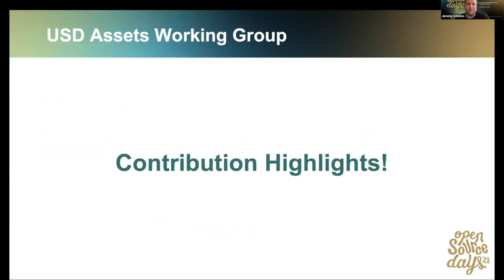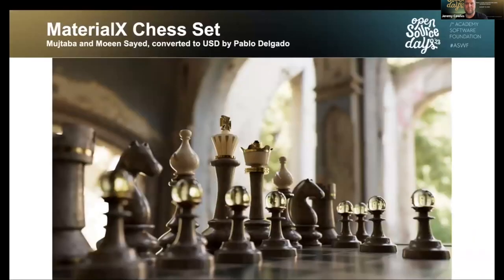I want to show some contribution highlights — just a tiny swath of the awesome things people have contributed; these are the ones that present well visually, but there's a ton of other great stuff in the repository too. The first asset is the MaterialX chess set, converted to USD by Pablo Delgado, who sent a pull request to our repository. This is an exemplary integration of MaterialX with USD — there are a bunch of different materials and individual objects, making it a great MaterialX test.